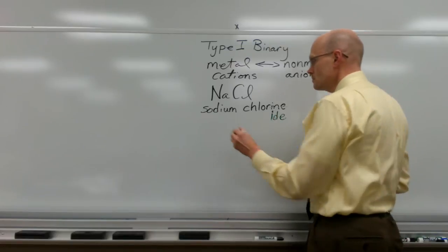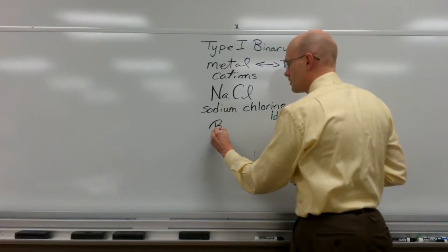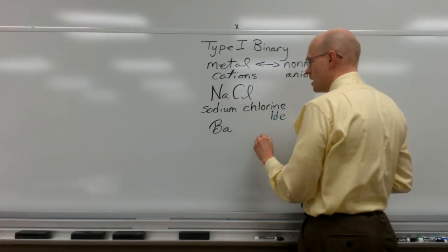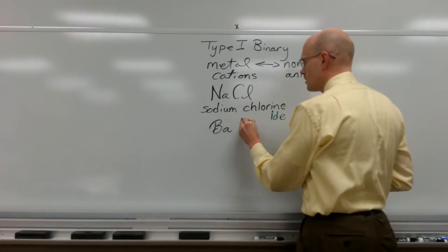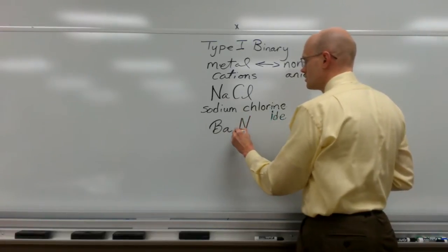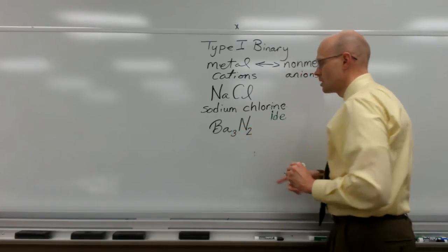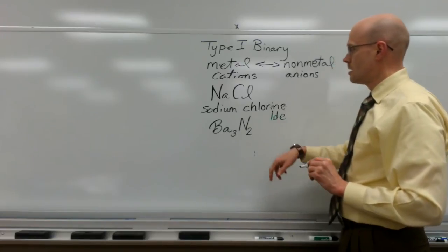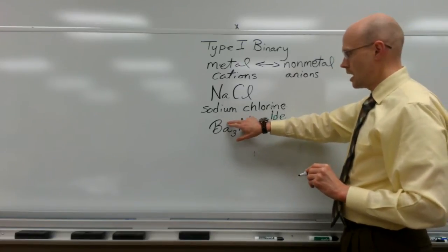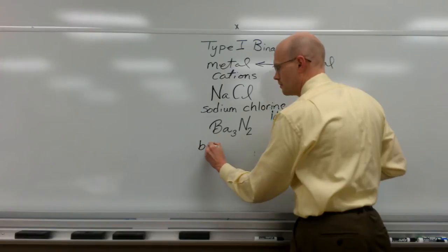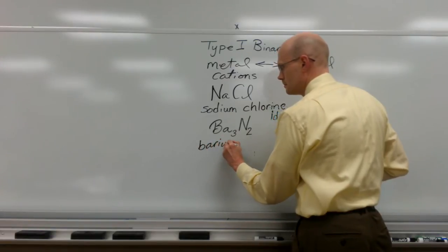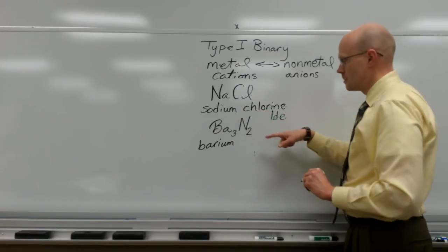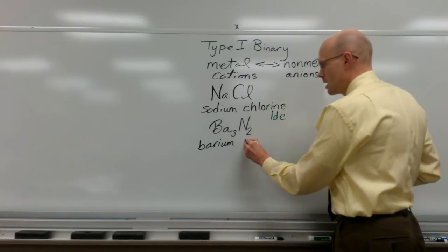Let's try another one. Let's say we have Ba for barium. And we have nitrogen. So here is its formula, Ba3N2. The metal's name, barium. The anion's name. It comes from the element nitrogen.